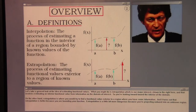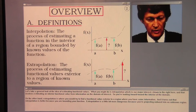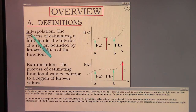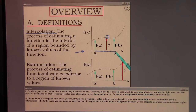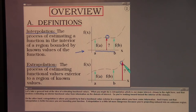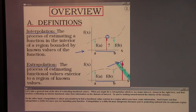Let's take a general look at the idea of estimating functional values. Interpolation, which is our major interest, involves estimating an interior functional value from information on the domain of interest — you're looking inward toward the interior. Extrapolation, on the other hand, is where you try to find a functional value exterior to a region where you have some information. Interpolation is better because you are bounding your function; extrapolation is more dangerous because you're projecting outward into an unknown region.